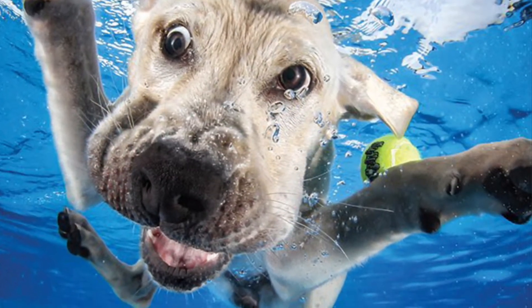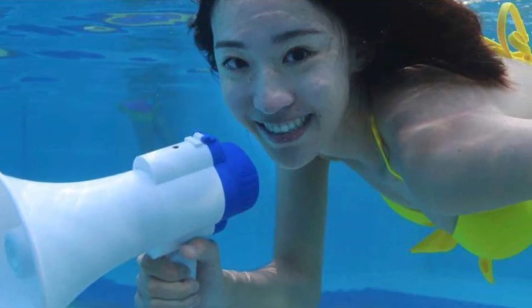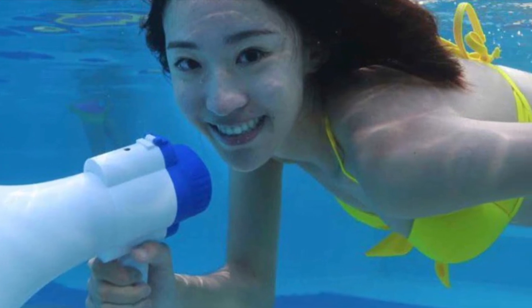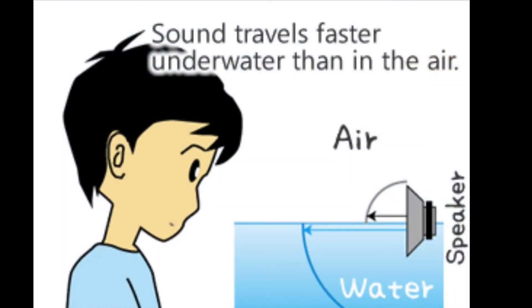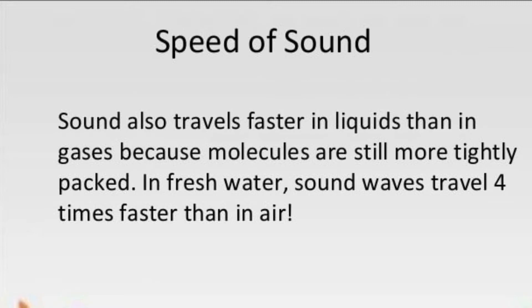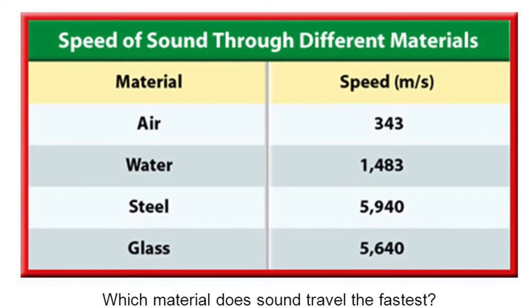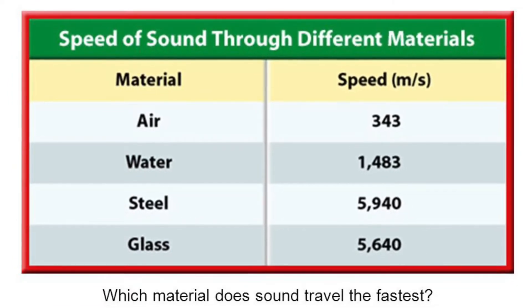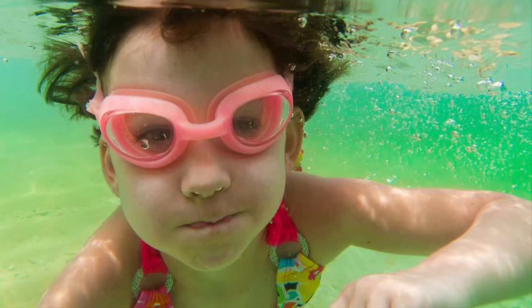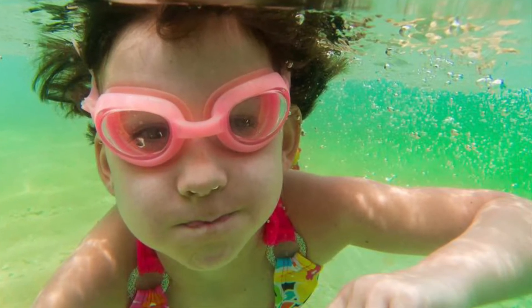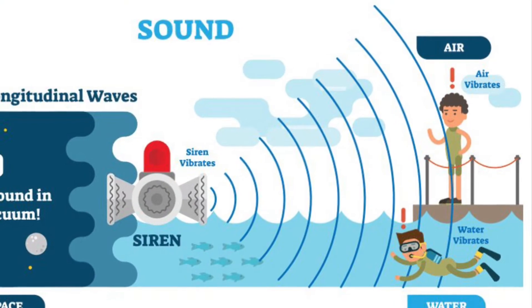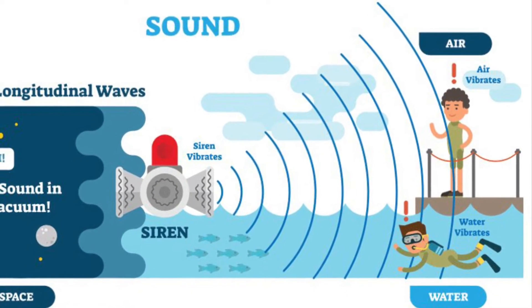Have you ever stuck your head in a swimming pool and listened to the sounds made by the other swimmers? It all sounds strange underwater. That's because those sound waves move faster through water than through air — actually five times faster in water than in air. Sound waves can also begin in one kind of matter and then move through another, like when you're underwater and your mom is yelling at you to get out of the pool. The sound of her voice moves through the air first, then hits the water, which makes it sound funny. This is called distortion.